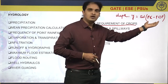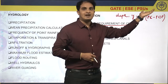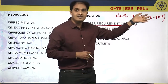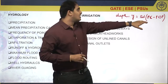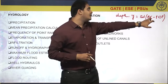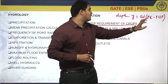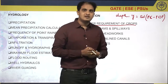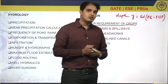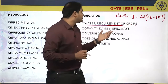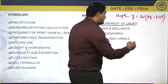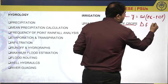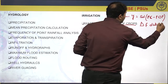Since water level greater than field capacity — up to saturation capacity — is dangerous, for optimum plant growth the water level needs to be maintained up to field capacity. From this we can expect some questions. The next most important topic on which you can expect a question is the relation between delta and duty.